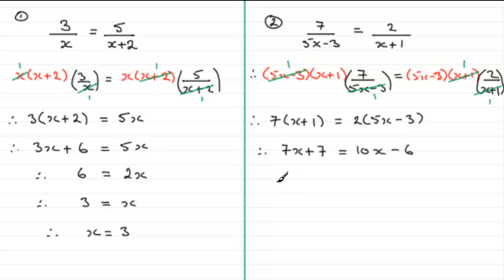Noticing again, I've got more x's on the right-hand side than the left-hand side. So, I'm going to subtract 7x from both sides. If I do that, I therefore have 7 left on the left-hand side. And 10x take away 7x is 3x. And then I've got the minus 6. Now, I'm going to add 6 to both sides. So, we get 7 add 6, which is 13, equals the 3x.